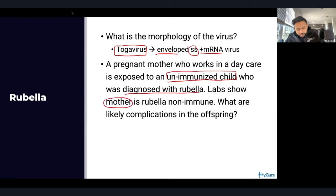Quick summary of palpable lymph nodes: submandibular — squamous cell carcinoma of the oral cavity and exudative tonsillitis; retroauricular — rubella; posterior occipital — tinea capitis; deep cervical — Kawasaki disease; left supraclavicular — gastric adenocarcinoma; axillary — breast cancer. Those are the high-yield palpable lymph nodes commonly tested on the USMLE.